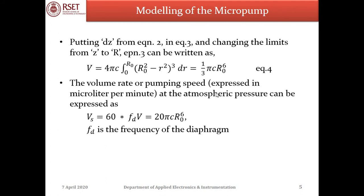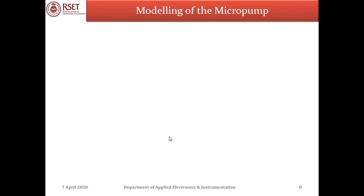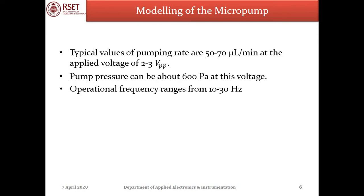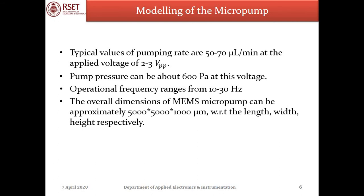The volume rate or pumping speed, expressed in microlitres per minute at atmospheric pressure, is Vs = 60·Fd·V = 20πC·R0⁶, where Fd is the frequency of the diaphragm. Typical values of pumping rate are found to be between 50 to 70 microlitres per minute at an applied voltage of 2 to 3 volts peak-to-peak. Pump pressure can be about 600 pascals at this voltage and the operational frequency ranges from 10 to 30 Hz. The overall dimensions of MEMS micropumps are approximately 5000 × 5000 × 1000 micrometers in length, width, and height respectively.